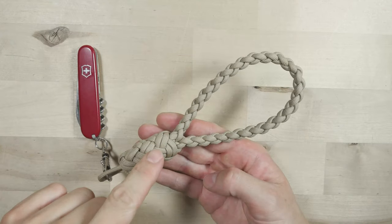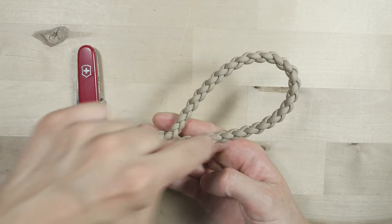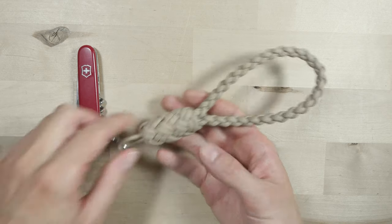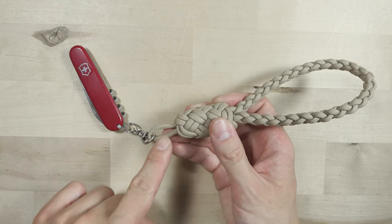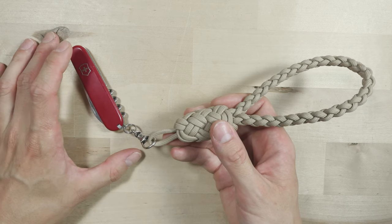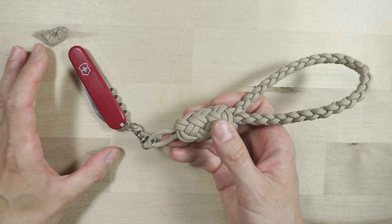In this one we're going to be making a wrist lanyard out of paracord. Here is an example of the style of lanyard. It consists of a wrist loop, a decorative knot, and a smaller loop for holding various items, a set of keys, a pocket knife, bear spray, whatever you need.